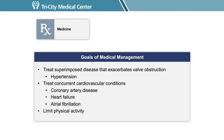The goals of medical management are to treat any superimposed disease process that will exacerbate the valve obstruction, including hypertension. You want to treat concurrent cardiovascular conditions such as coronary artery disease, heart failure, or atrial fibrillation, and you may need to limit physical activity to decrease the onset of symptoms. Medications can be used for mild to moderate aortic stenosis, but no medications can reverse or slow the progression of disease. If your aortic stenosis is severe and you have symptoms, the only effective treatment is an aortic valve replacement.